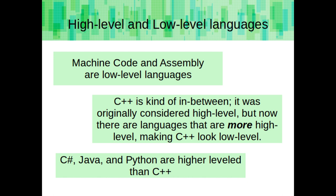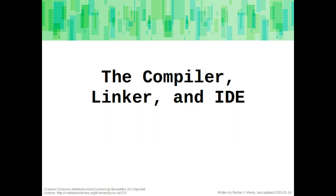C++ is kind of in-between. It was originally considered high-level, but now that there are languages that are even more high-level, it makes C++ look low-level. C#, Java, and Python are higher-level than C++. We are going to be utilizing a compiler, linker, and IDE in this class.